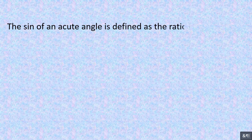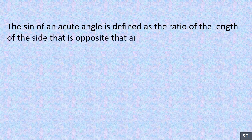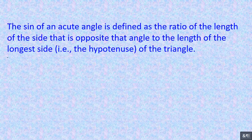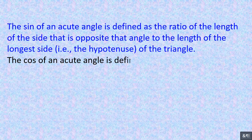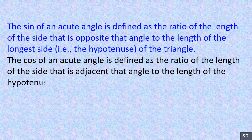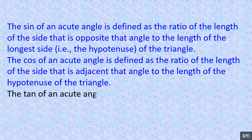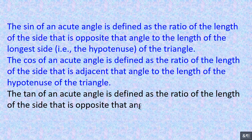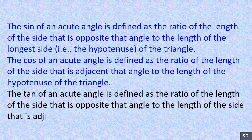The sine of an acute angle is defined as the ratio of the length of the side that is opposite that angle to the length of the hypotenuse of the triangle. The cosine is defined as the ratio of the adjacent side to the hypotenuse. The tangent is defined as the ratio of the opposite side to the adjacent side.